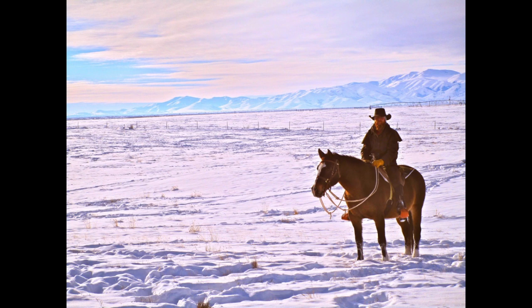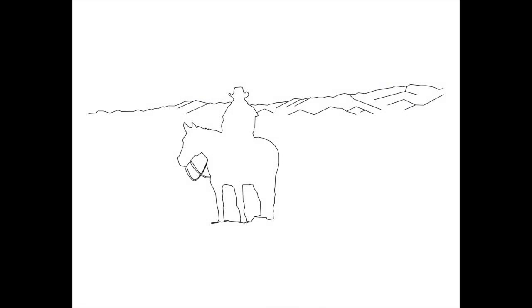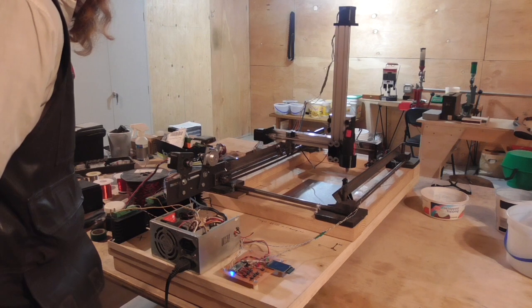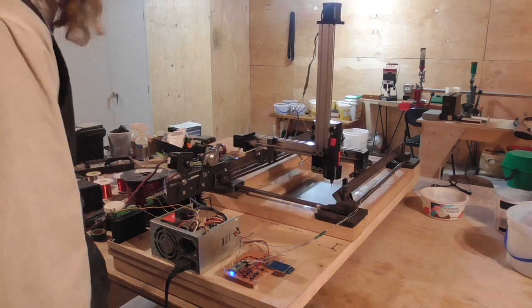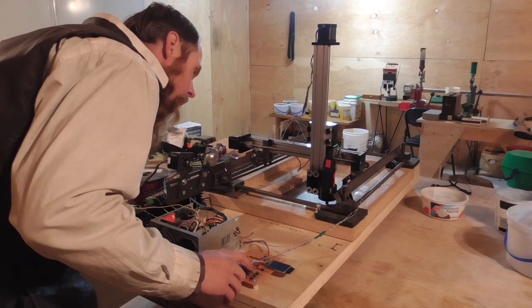I also wrote a Python script that would extract line entities from a DXF file and convert them into G-code. I was able to get the machine working, but the spindle is underpowered and the rigidity of the axes leaves something to be desired.